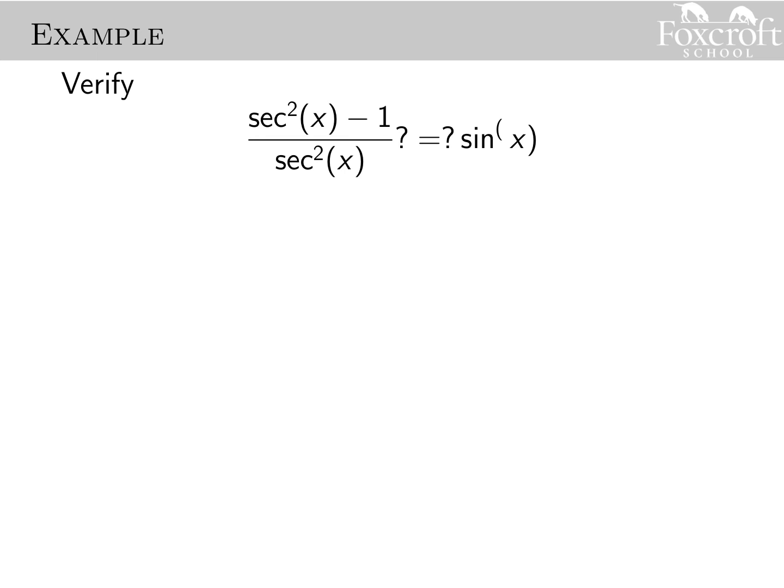Next I verify that secant squared of x minus one, divided by secant squared of x, equals sine of x — though it might end up being sine squared; that might be a typo. The general rule of thumb is you're going to start with the more complicated side, because it would be really hard to turn sine into something that looks this complicated. It's simpler to simplify something rather than make it more complicated, so I'm going to start on this left-hand side.